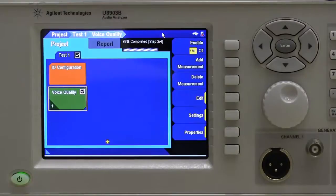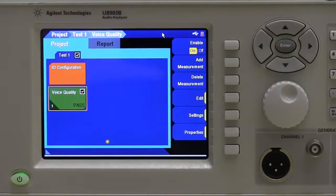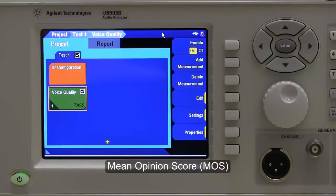POLQA and PESQ work by comparing a degraded signal, usually by typical network transmission interference, or processed signal to the original reference signal. The perceptual differences between the two signals are then rated based on the Mean Opinion Score, MOS.